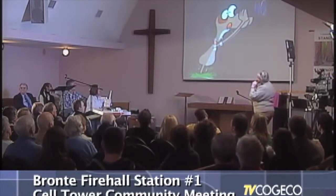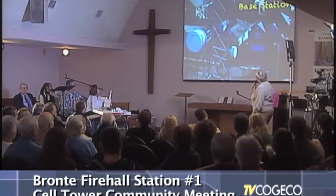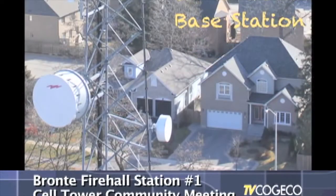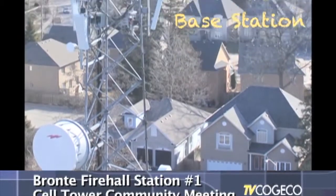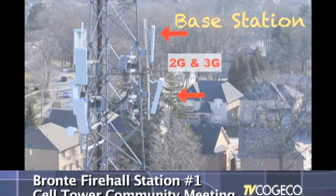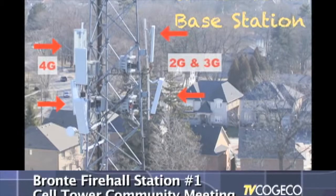Let's take a look at the antenna on the Bronte fire hall. Here you can see that there are three antennas that are point-to-point. If we move up, we have some sector antennas. These are the 2G and 3G antennas, and then we have something called a 4G antenna. You can see here that they're much broader than the 2G and 3G antennas.